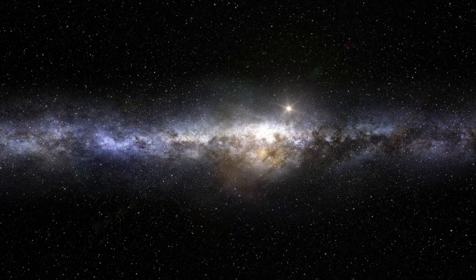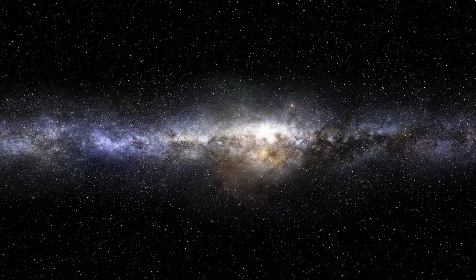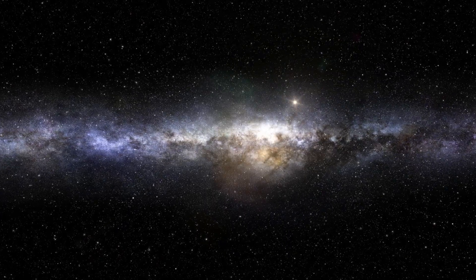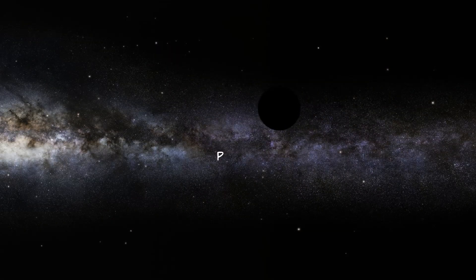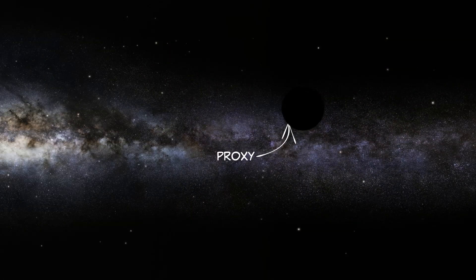This is called a proxy. For instance, light fluctuations from stars tell us there are orbiting planets that we can't see. The light is acting as a proxy for the planets.